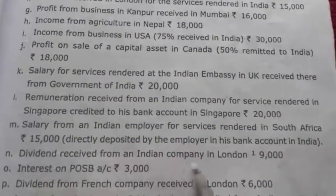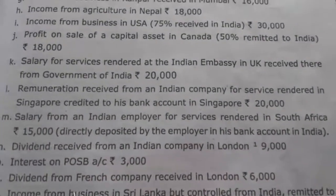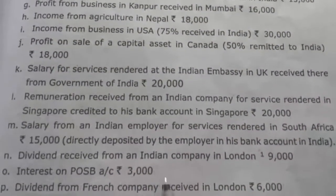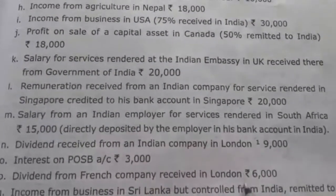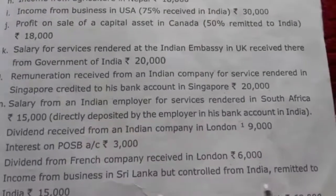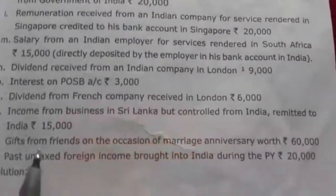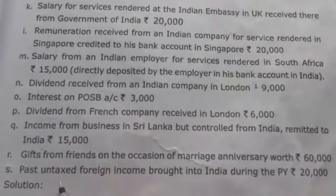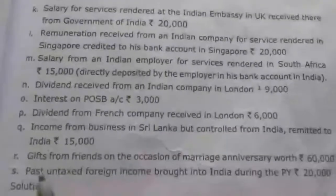Remaining items: dividend received from an Indian company in London Rs. 9,000; interest on POSB account Rs. 3,000; dividend from French company received in London Rs. 6,000; income from business in Sri Lanka controlled from India, remitted to India, Rs. 15,000; gift from friends on the occasion of marriage anniversary worth Rs. 60,000; past untaxed foreign income brought into India during the previous year Rs. 20,000.